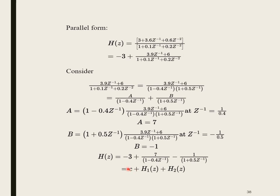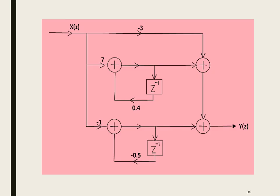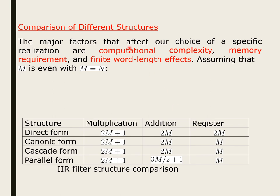C is a constant in the parallel form 1 structure. Parallel form uses C plus H1(Z) and H2(Z) drawn with individual adders in parallel. For the same problem, four forms have been demonstrated. The major factors affecting choice of a specific realization are computational complexity, memory requirement, and finite word length effects.